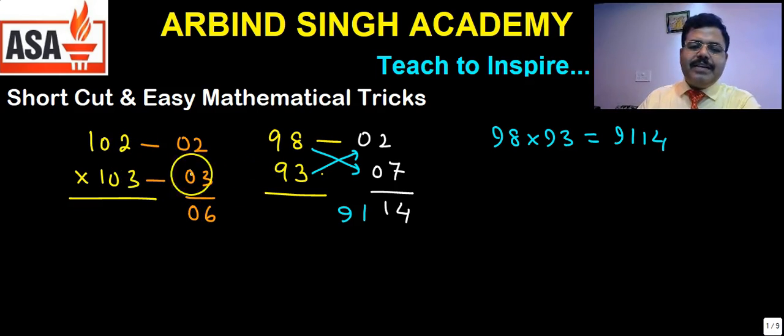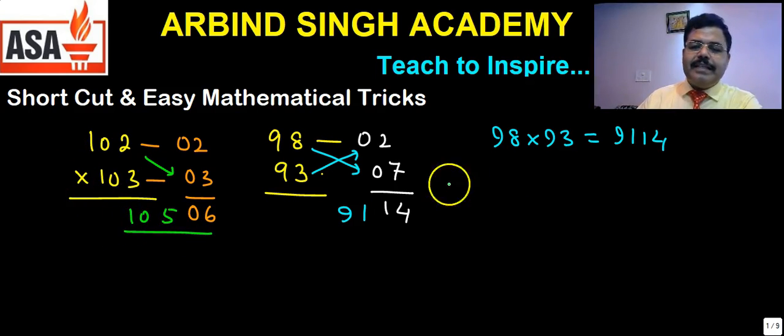And now instead of subtracting these two, because it is more than 100, more means plus, so you need to add them. You need to add them - either this to this or this to this. 102 plus 03 is 105, so product of 102 into 103 is equal to 10506.